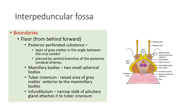So the structures forming the floor from posterior to anterior are: the posterior perforated substance, mammillary bodies, tuber cinereum, and infundibulum of the pituitary gland.